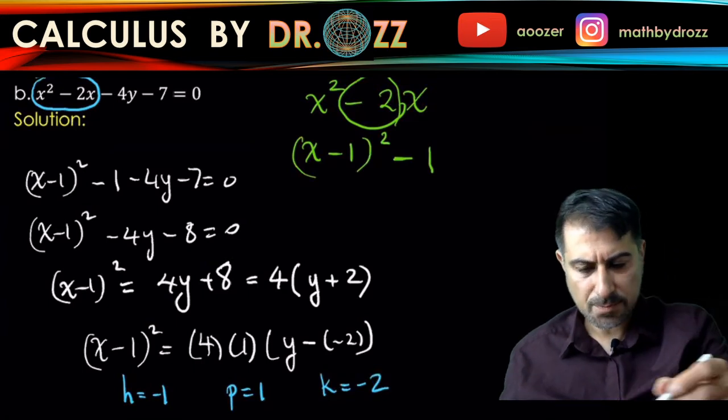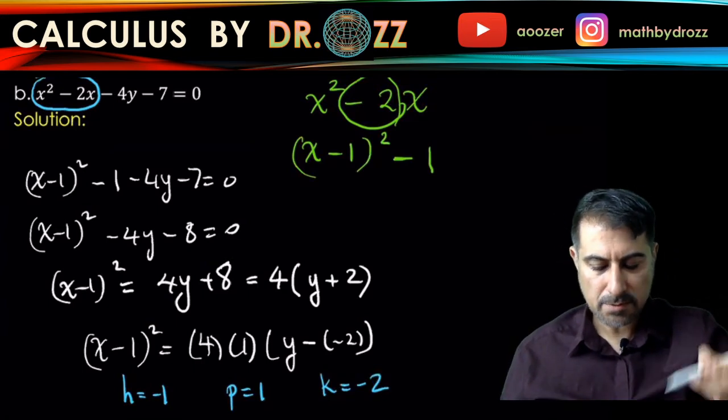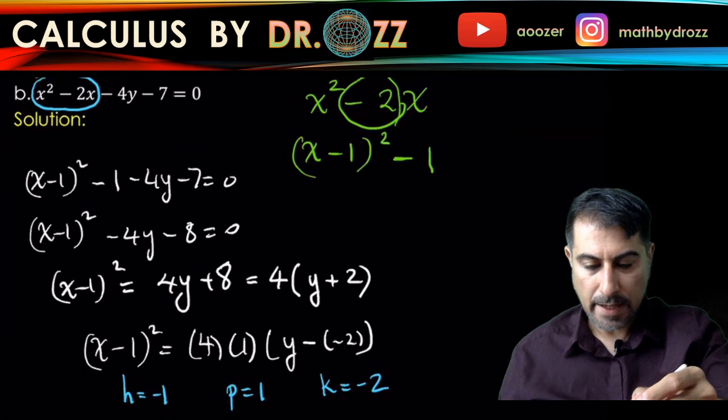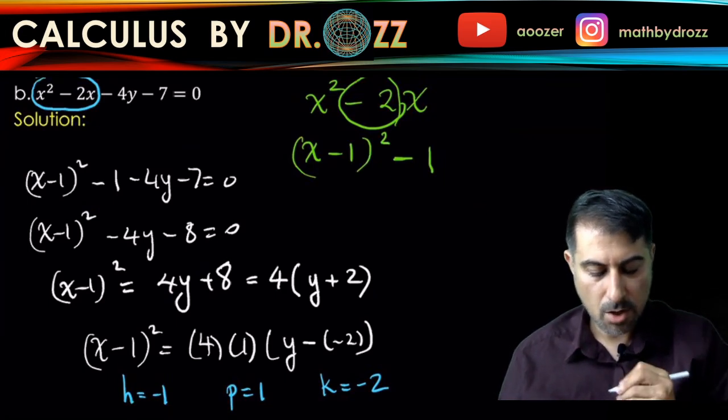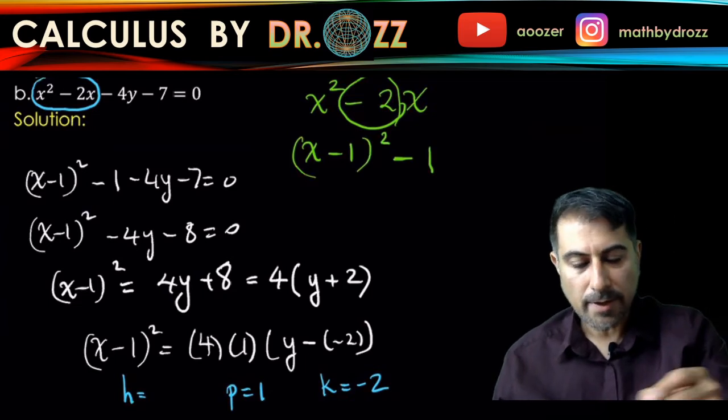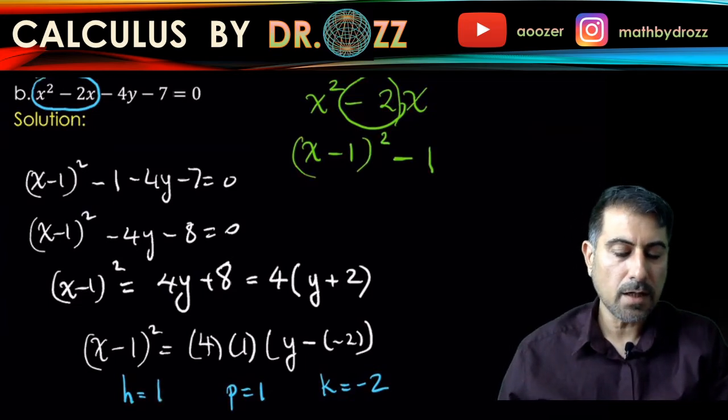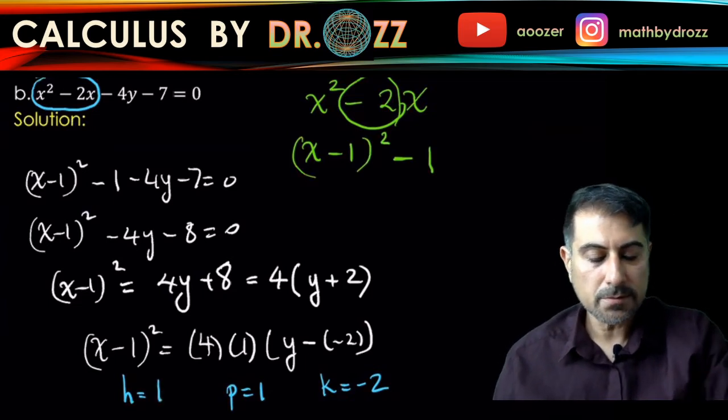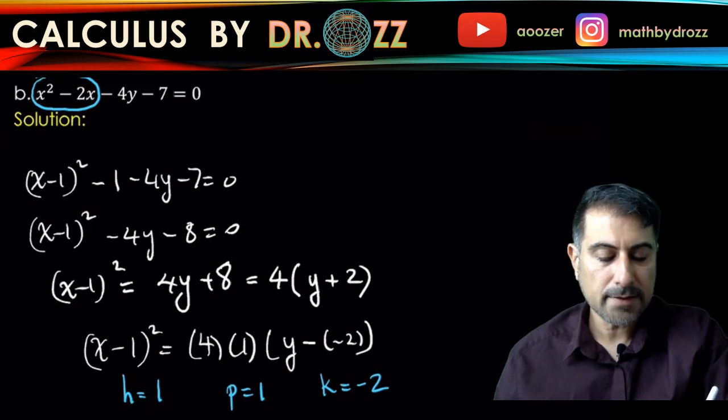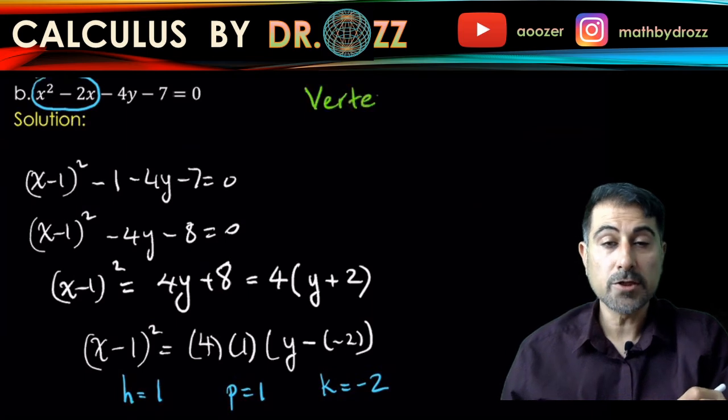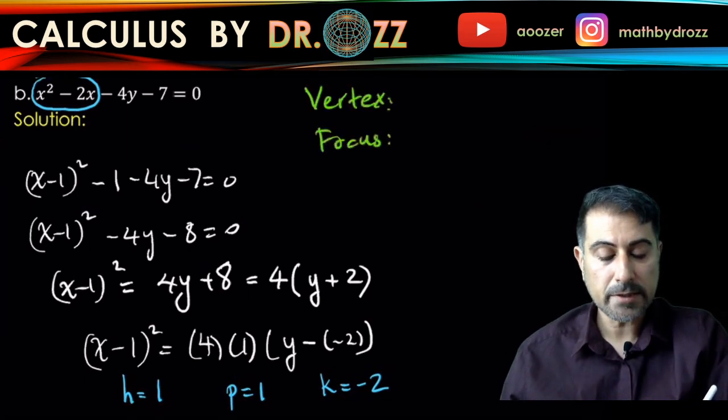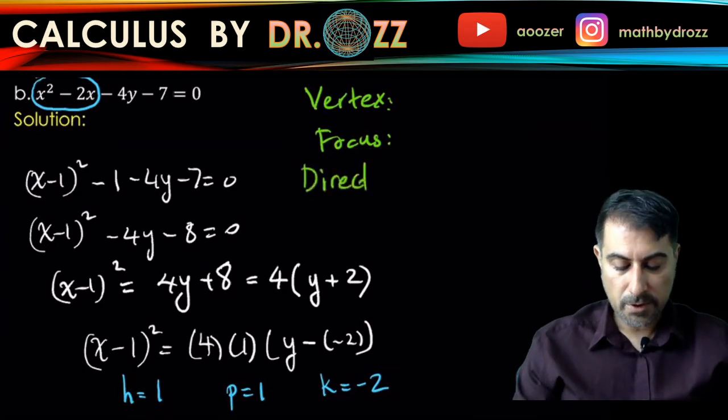In fact, h is just 1, right? Because x minus h, so I should correct this. This should be 1. What I'm going to do next is write down the coordinates of its vertex, focus, and I should also write the equation of the directrix.